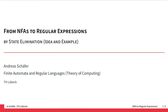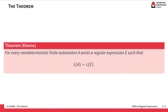When introducing regular expressions, I claimed that they define the same set of languages as finite automata. So far I've proven how to construct a finite automaton from a given regular expression. In this video we'll have a first look at the other direction: how to derive a regular expression from a given non-deterministic finite automaton. What we are going to prove here is the second half of the so-called Kleene theorem — that for every non-deterministic finite automaton A, we can find a regular expression E that defines the same language as accepted by the automaton.